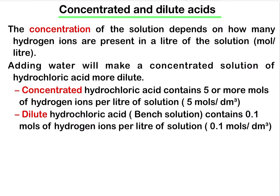The concentration of a solution depends on how many hydrogen ions are present in a liter of solution, that is moles per liter. We can make a diluted solution from a concentrated solution by adding acid to water.